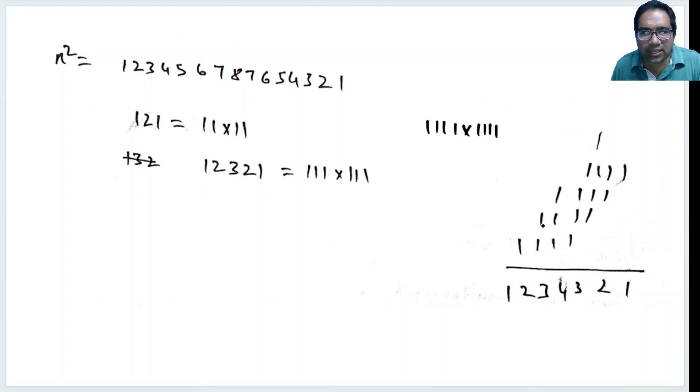What does that mean? When there are 4 ones, then it will go till 4 and come back to 1. Similarly, if n squared is this number, then what does that mean? n is number of 1s: 1, 2, 3, 4, 5, 6, 7, 8. Eight 1s. It will go till 8, eight 1s, and then come back to 1. So that means n equals simply eight 1s.